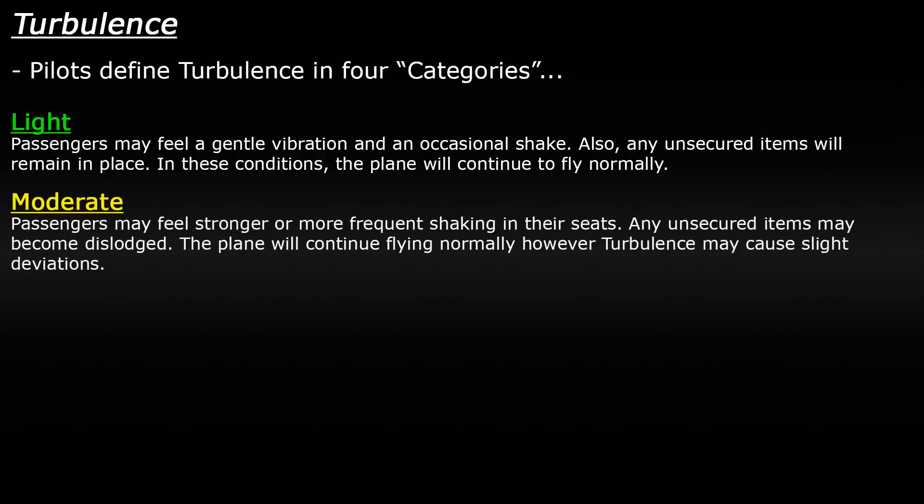Next you have moderate turbulence. Passengers may feel stronger or more frequent shaking in their seats, and people may have difficulty walking around the plane as the shakes may throw them off balance. Unsecured items may become dislodged — the bottle of water might begin to slide across the table or even tip over. In these conditions the plane will continue flying normally, however it may deviate slightly; for example, a gust of wind might push the plane up or down by a couple of feet.